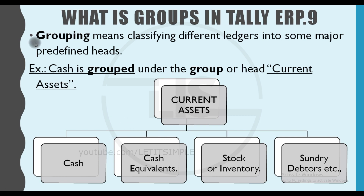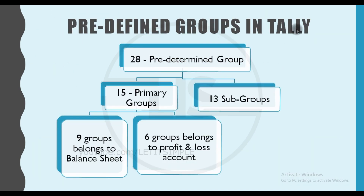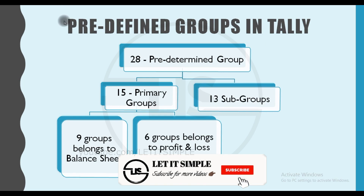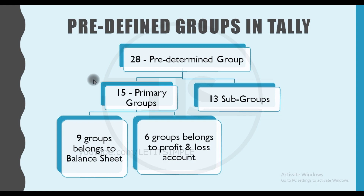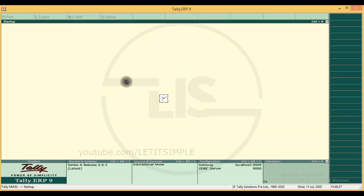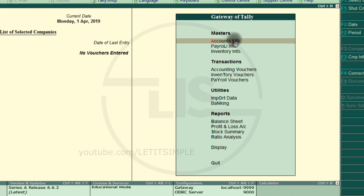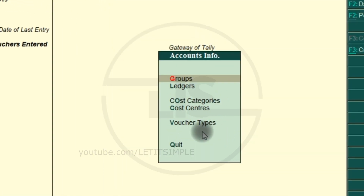If we create a ledger account, we need to know which group it belongs to. For example, what is current assets? Cash and cash equivalents, stock and inventory, marketable securities. We also have various groups. There are predefined groups. We already have several inbuilt groups in Tally. We can use the software. This is the master — the gateway of Tally. If we create a ledger, group.